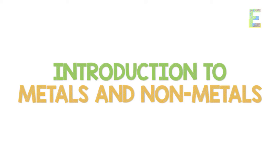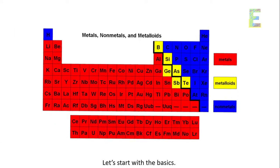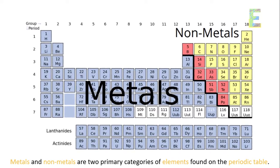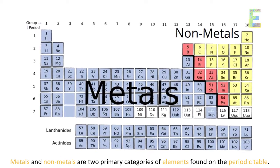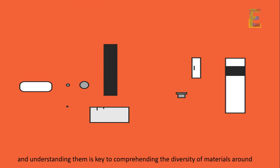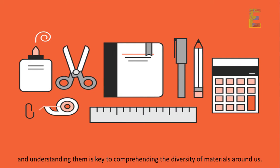Introduction to metals and non-metals. Let's start with the basics. Metals and non-metals are two primary categories of elements found on the periodic table. They have vastly different properties, and understanding them is key to comprehending the diversity of materials around us.